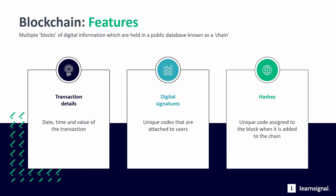Hashes. A hash is a unique code which will be assigned to the block when it is added to the chain. An individual block can hold up to a megabyte of data, and in each block, the blockchain will contain thousands of individual transactions.